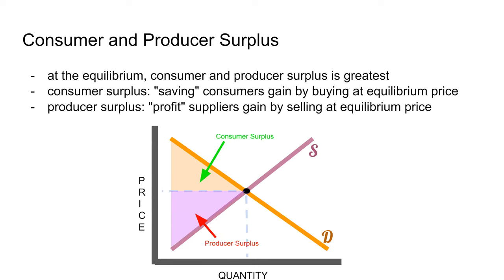At the equilibrium, consumer and producer surplus are maximized. On a graph, the area below the demand curve and above the equilibrium price is your consumer surplus — basically the savings a marginal consumer gains by buying at the equilibrium price, because they value the good higher but get to buy it at a lower price. Producer surplus is the shaded area below the equilibrium price and above the supply curve — the profit that individual suppliers gain by selling at the equilibrium price, because some sellers can provide the good at a cheaper price but earn more by selling at the market price.